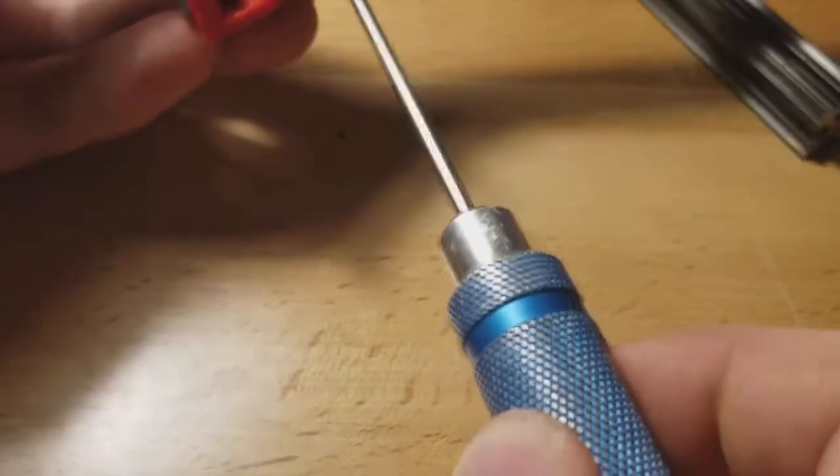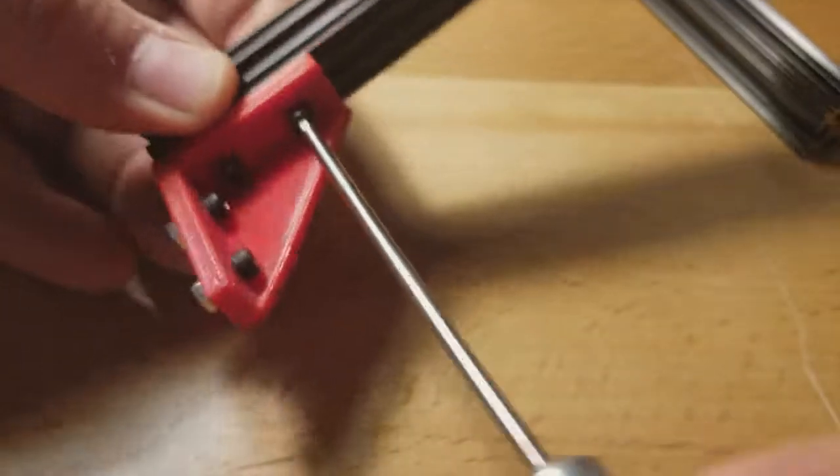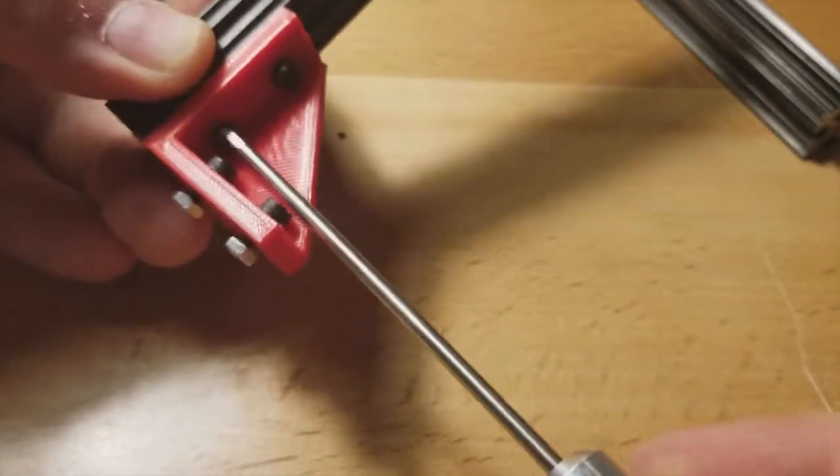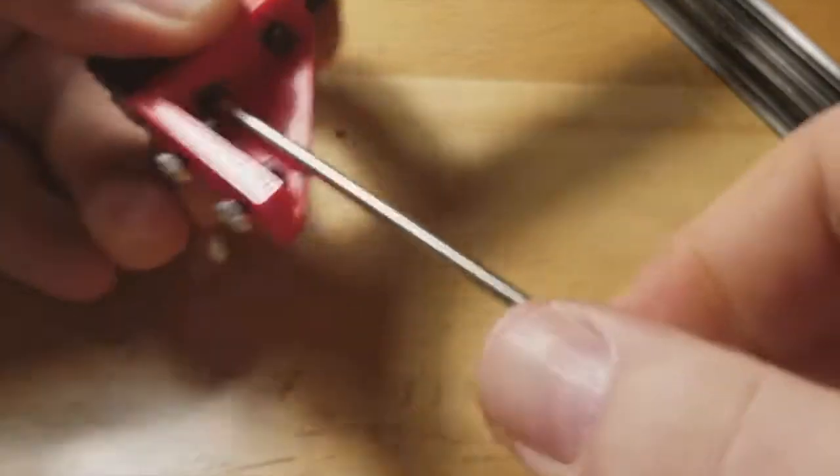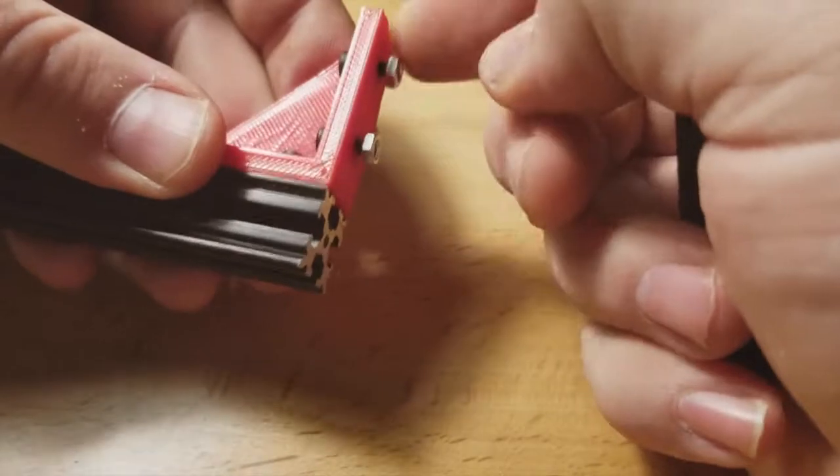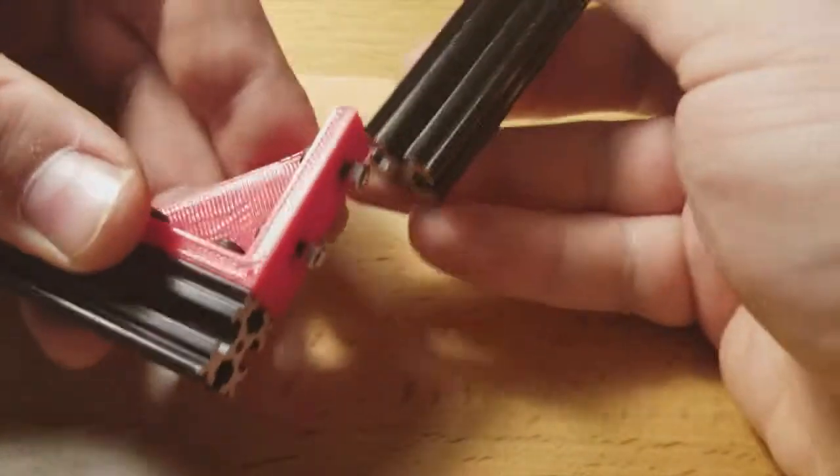Okay. So what we're going to do then is give this a nice tightening. A little bit goes a long way on these. These are really nice secure connections. Okay. And then we're going to do the same thing for this other piece of extrusion.